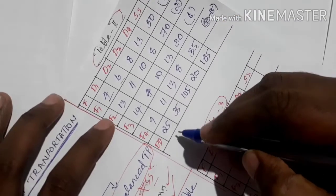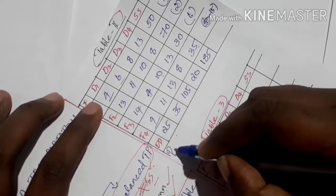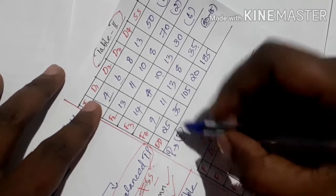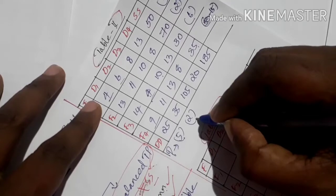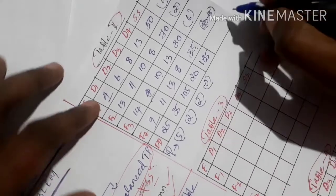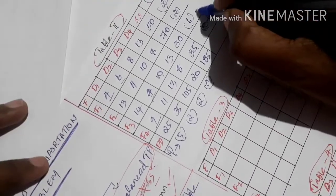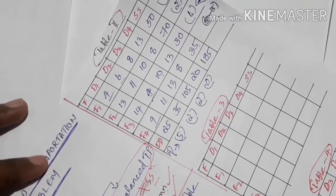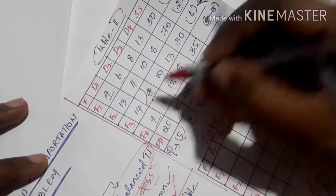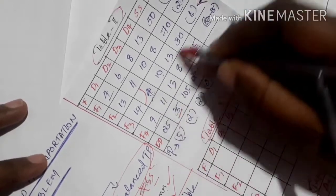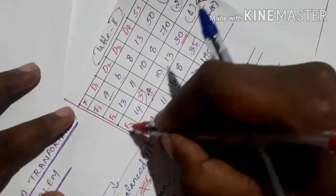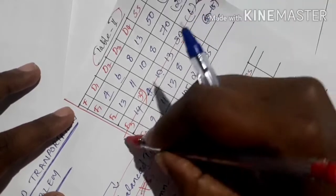The maximum penalty in Table 2 is 6. The row with penalty 6 has lowest cost 4. We allocate to that cell: supply is 30 and demand is 35. Since supply is less than demand, we allocate 30 units. The supply is exhausted, so we delete that row and move to Table 3.